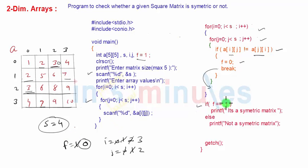So here we'll check if f is still 1, means this has not occurred, then we'll print it's a symmetric matrix. But in our case you can see f is 0 so we'll print not a symmetric matrix.